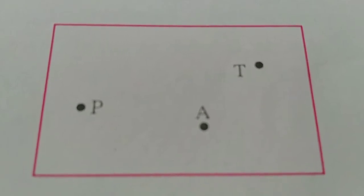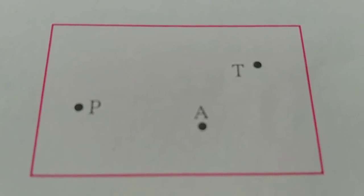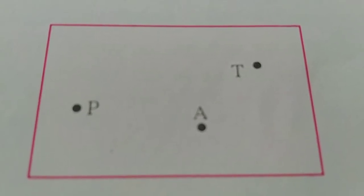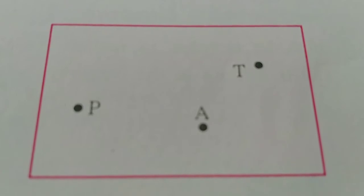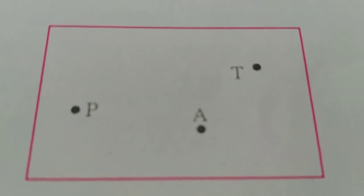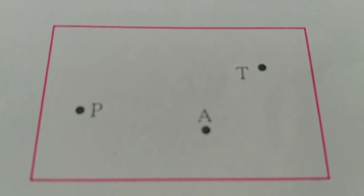The dots in the rangoli are the symbols for points. A point can be given a name. Capital letters of the alphabet are used to name a point. The points P, A and T are shown in the figure alongside.